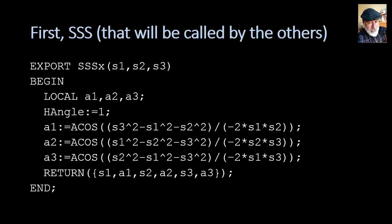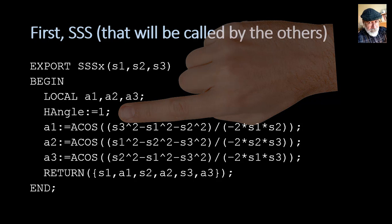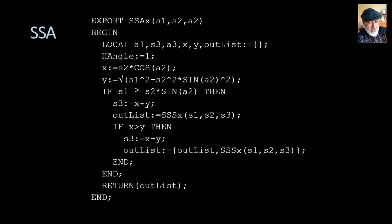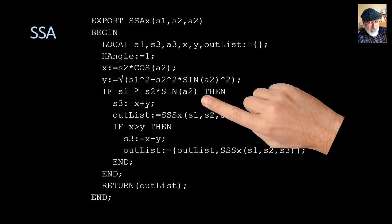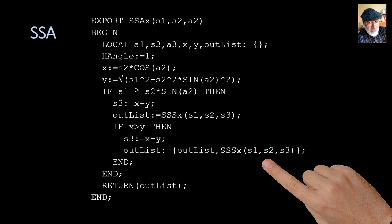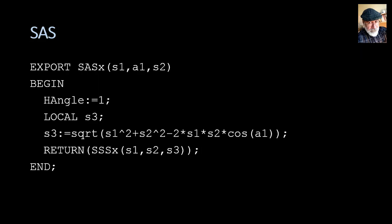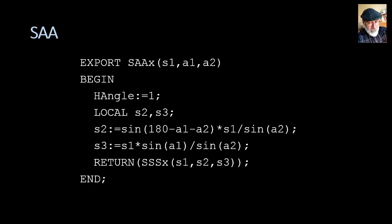To end the presentation, I'll show you briefly the code of each one of those five programs. First, SSSX. This program will be called by all the other programs. Please observe that here at the top, I set the calculator to work in degrees mode. So all these programs work exclusively in degrees mode. SSA is probably the most interesting of the five programs. If S1 is greater or equal than S2 multiplied by the sine of A2, then we have two solutions issued out here and here. The sum of two values and the other is the difference of those two values. Check out how lists are manipulated there. SAS, SAA, and ASA are very straightforward programs. I invite you to read them carefully.